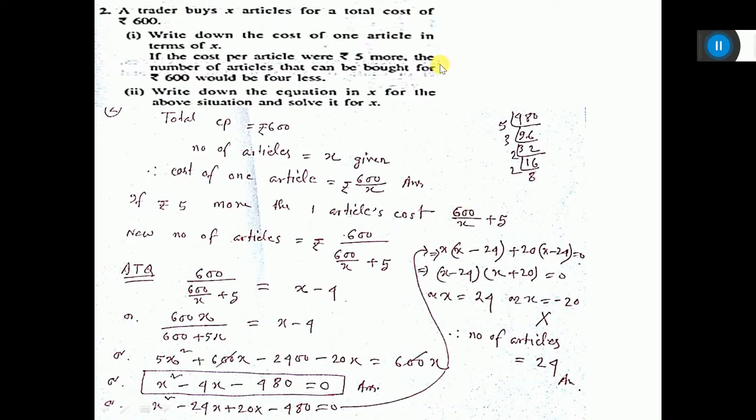Listen students, I want to do number two now. A trader buys x articles for a total cost of 600 rupees. Write down the cost of one article in terms of x. So total cost, CP, that is cost price, is 600.